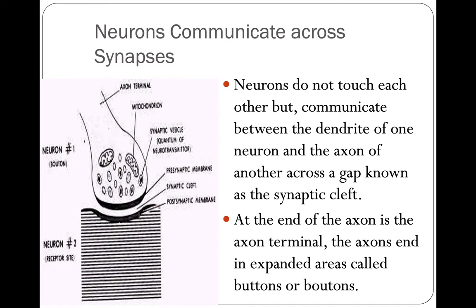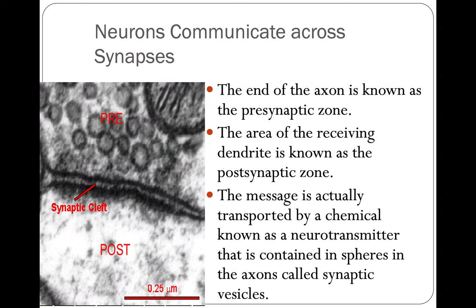Neurons do not touch each other. They communicate between the dendrite of one neuron and the axon of another across a gap known as the synaptic cleft. At the end of the axon is the axon terminal. The axons end in expanded areas called buttons or boutons — boutons is French for button. The end of the axon is known as the presynaptic zone; the area of the receiving dendrite is the postsynaptic zone. The message is transported by a chemical known as a neurotransmitter, contained in spheres called synaptic vesicles.